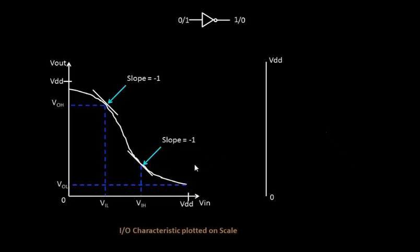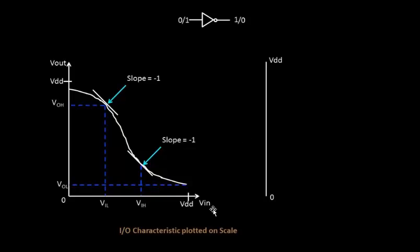Hello everyone. Let's continue to plot the VIL and all the voltage levels that we have attained in this particular graph onto this particular scale. What we are trying to get here is the noise margins. Noise margin will basically define the input voltage range and the output voltage range and where your input voltage should lie. Let's try to plot this and then it will make more sense to talk about the noise margins.